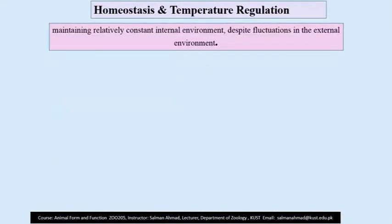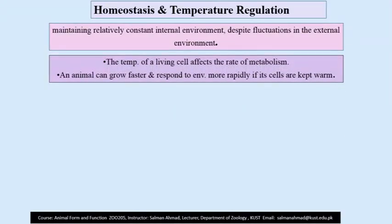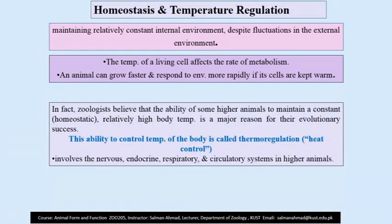Now homeostasis and temperature regulation. Homeostasis means maintaining a relatively constant internal environment despite fluctuations in the external environment. The temperature of a living cell affects the rate of metabolic activity. An animal can grow faster and respond to the environment more rapidly and efficiently if its cells are kept warm. Zoologists are of the view that homeostasis and thermoregulation are the major reasons for the evolutionary success of higher animals.